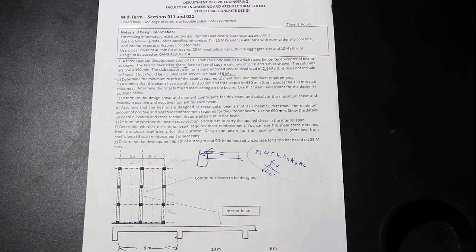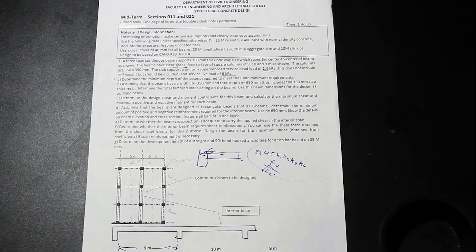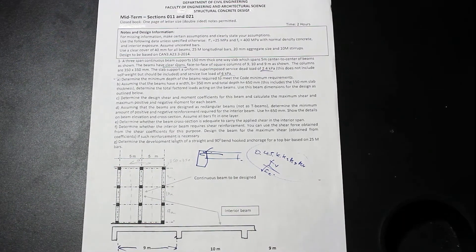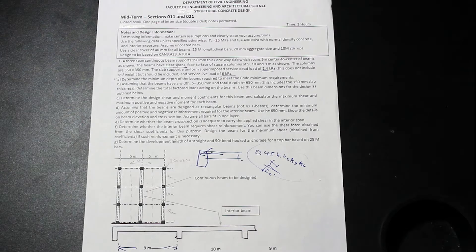So this course dealt mainly with one-way slabs, design of beams, column design, concrete column design, and reinforcement, embedment lengths, development lengths of bars, that kind of stuff. And the course after this, structural concrete 2, dealt with two-way slabs, torsion, deep beams, more advanced concrete topics.